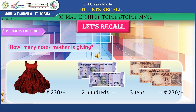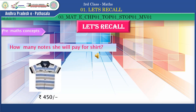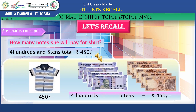Suppose we also have hundreds and ten rupee notes, and we want to buy a shirt. How many notes will we pay? Yes — four hundreds and five tens — four hundred and fifty rupees. Children, you are amazing, you gave the answer, super!